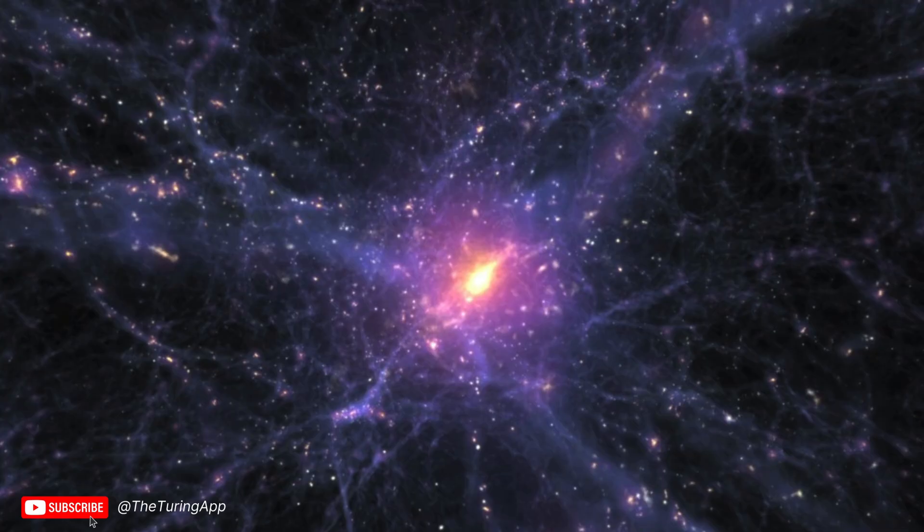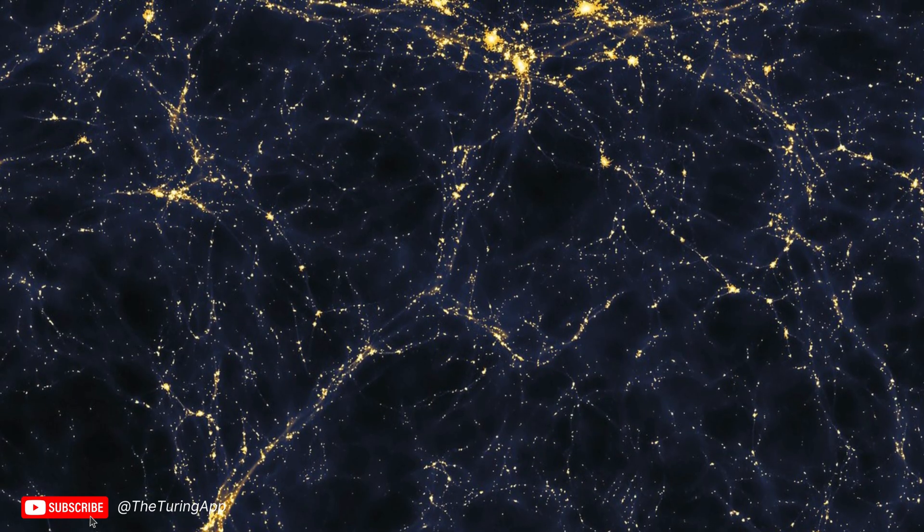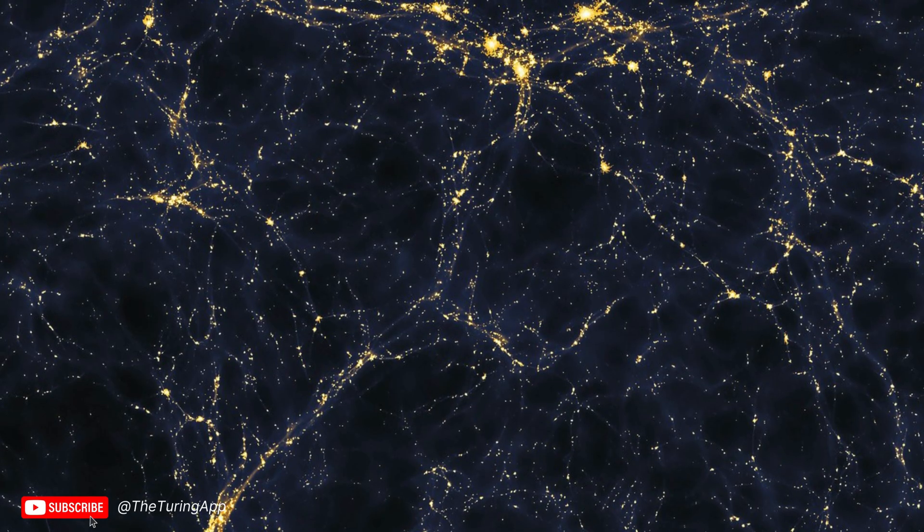On the grandest scales, the universe is a delicate balance of opposites. Dense filaments and clusters of galaxies weave the cosmic web, their gravity drawing matter together. Meanwhile, the voids, sprawling, empty, and ever-expanding, push outward, creating a dynamic equilibrium that defines the large-scale structure of the cosmos. Voids grow at astonishing rates. Simulations show that they expand faster than the universe's average rate of growth, often reaching sizes of hundreds of millions of light-years. This dynamic reveals a fundamental paradox. The more voids expand, the more isolated galaxies and clusters become, amplifying the contrast between structure and emptiness.